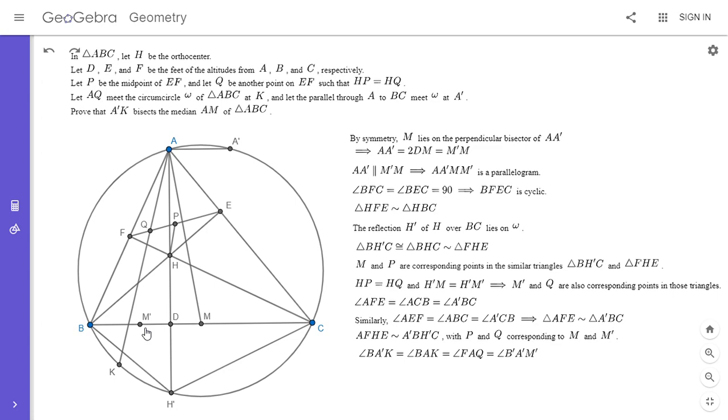And so from there, if we have angle BA prime K is equal to angle BA prime M prime, then that means that the points A prime, M prime, and K are collinear.